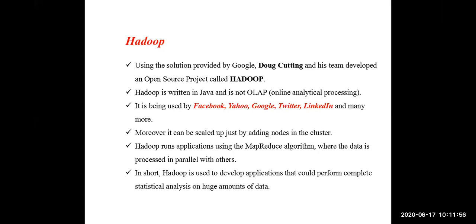For the second category, the data may be small or big, but they want processing of the data very fast. They want to analyze the data and process it very fast. For that purpose, they approach Hadoop. So Hadoop is used mainly for two purposes: storing huge volumes of data, and fast processing of data.